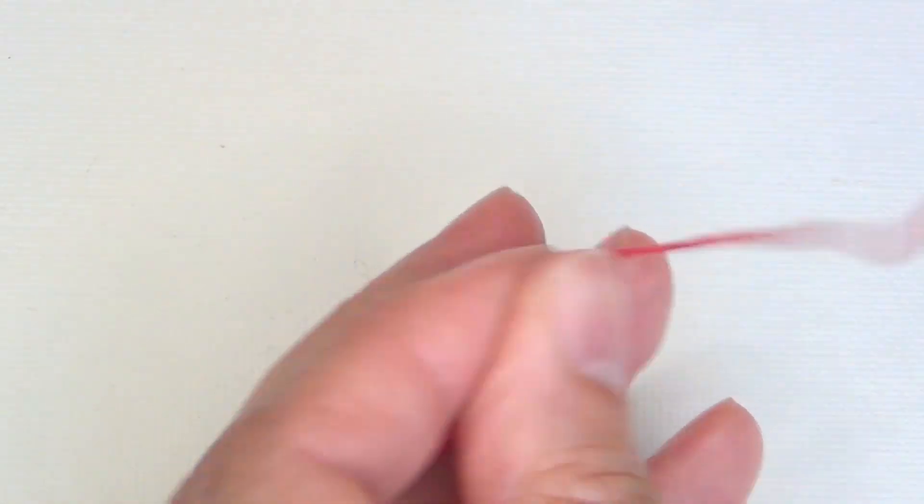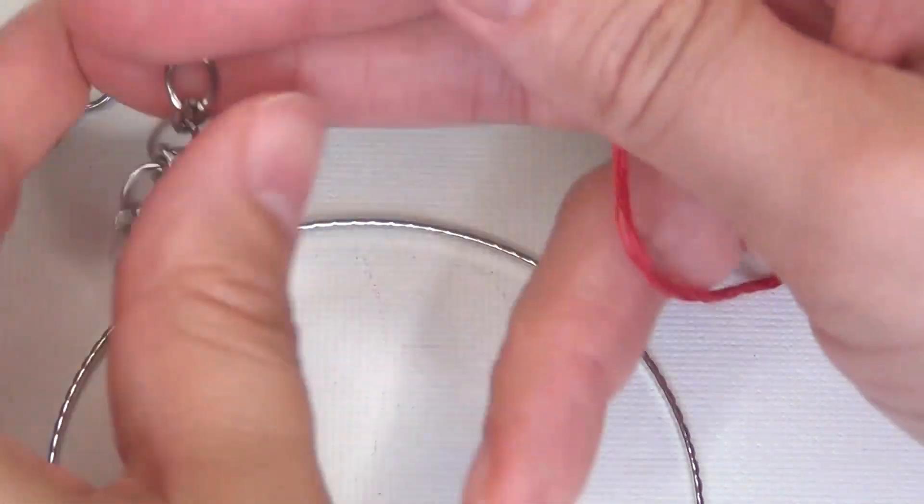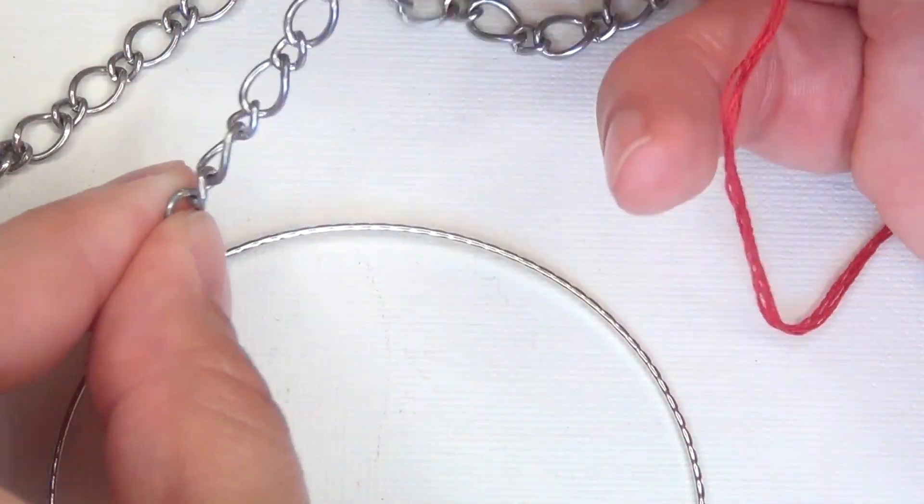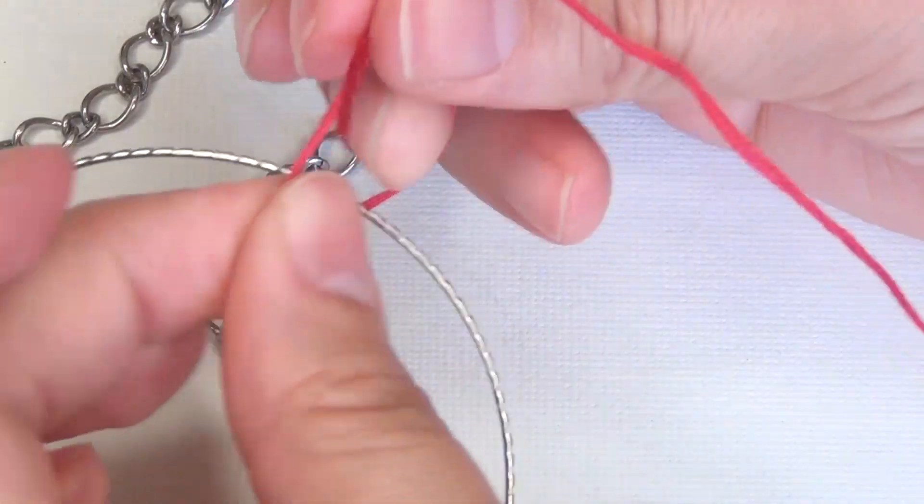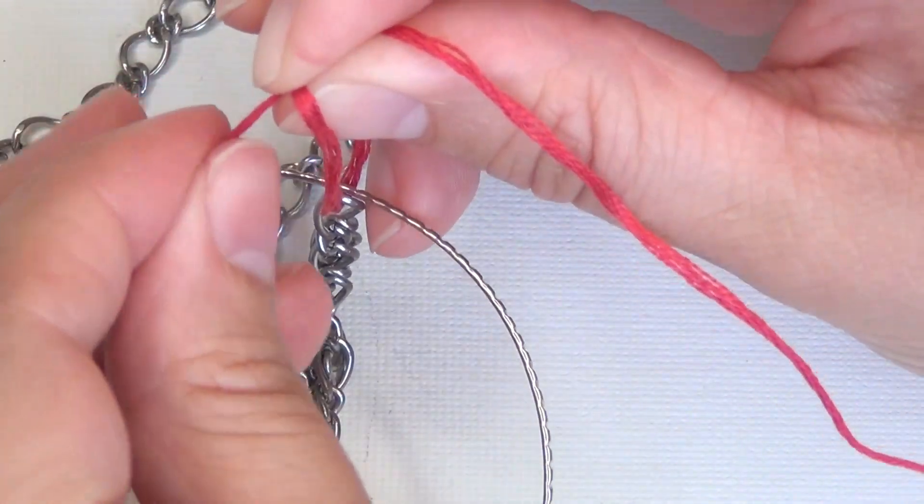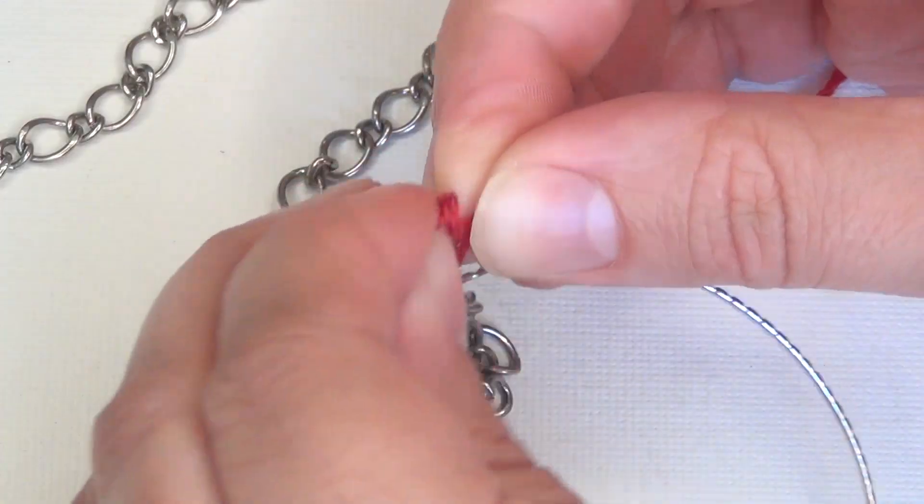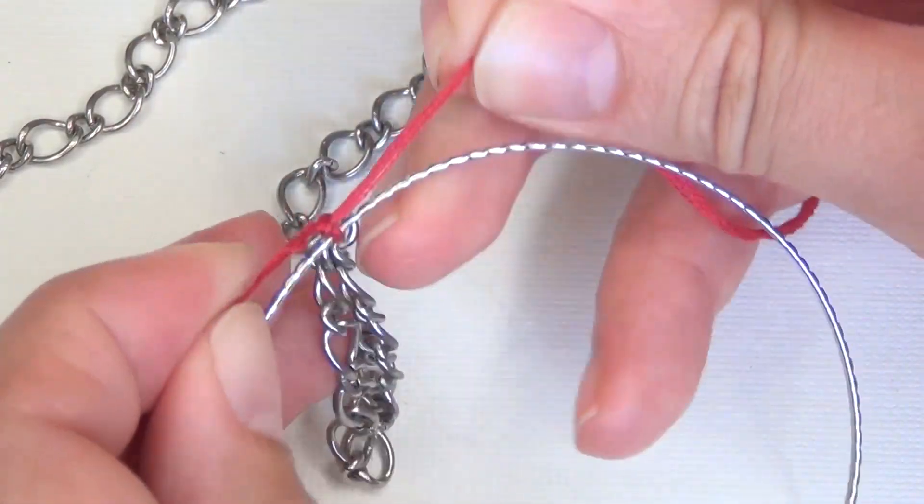Then take the other end of your embroidery thread and measuring out about two inches from the end of your chain, put your embroidery thread through that chain link and then tie it onto your bangle. Make sure you tie it in a tight knot that is not going to slip out because this is going to be the foundation of your bracelet.